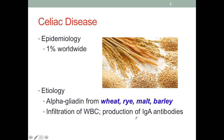About 1% of the general population is affected by celiac disease worldwide. The specific etiology is that wheat, rye, malt, and barley — these grains and their products — contain alpha-gliadin, which is a protein that is a component of gluten. Some people with certain genes do not respond to gluten very well. As a result, the small intestine is the target of the immune response triggered by gluten. This causes the tissues of the small intestine to be infiltrated by white blood cells, which congregate there because the small intestine is the target.